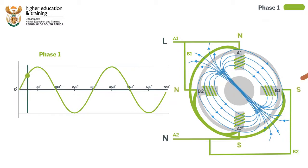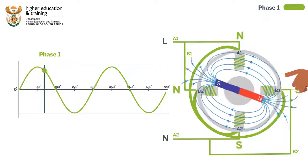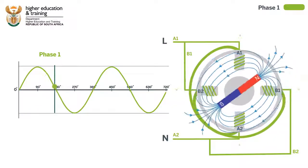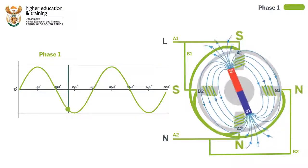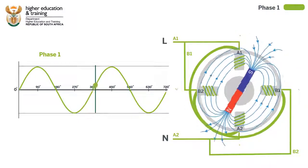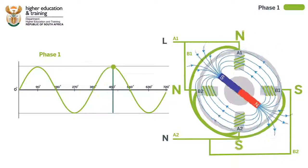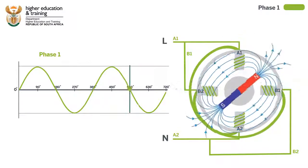If we give the rotor an initial push, it will rotate because of the extra external force we applied. This extra force and the flipping stator field polarity would be enough to keep it rotating.